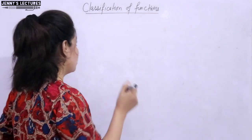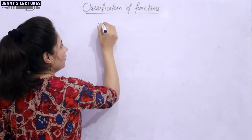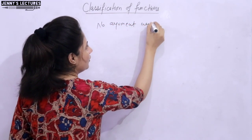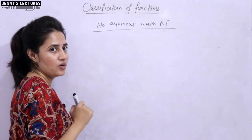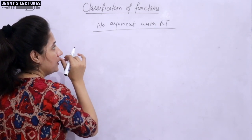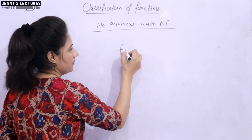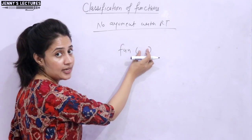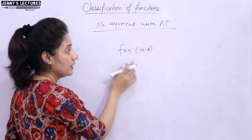Now let's get back to the topic. We are going to discuss functions which have no argument but with a return type. The general syntax: suppose the function name is 'fun' with no argument, so we write void here.